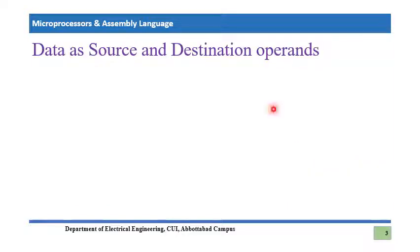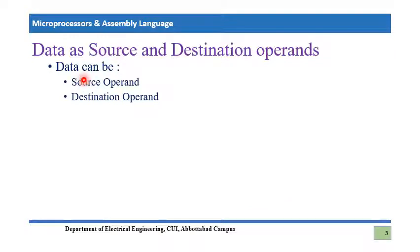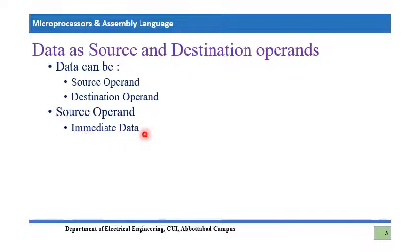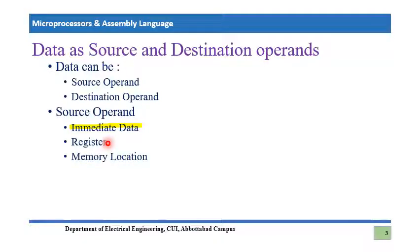Data can be both source and destination operand. The source operand can be immediate data — meaning something directly given as part of the instruction. The source operand can also be a register: it may come from a data segment register, a data register, an index register, or a pointer register.